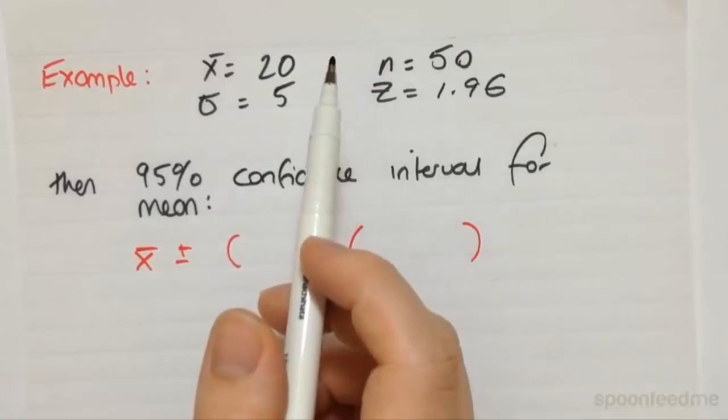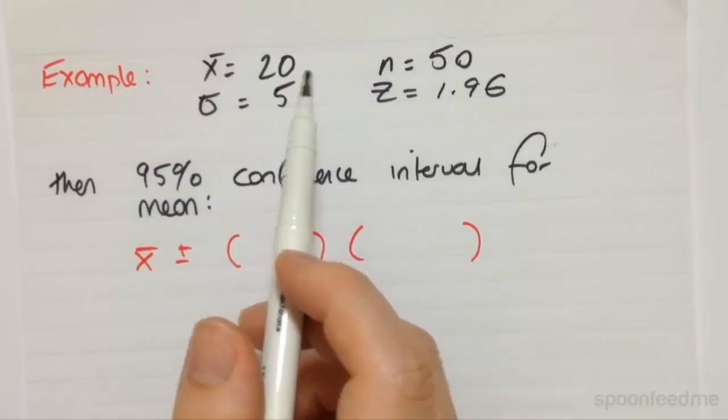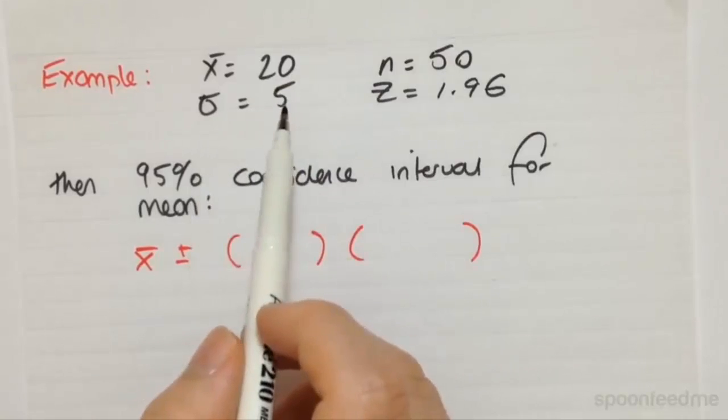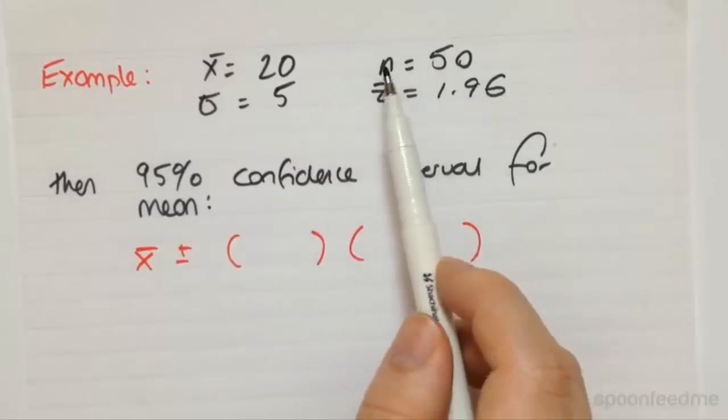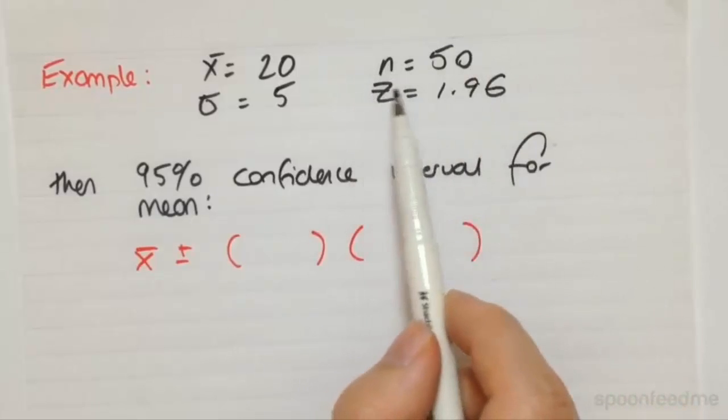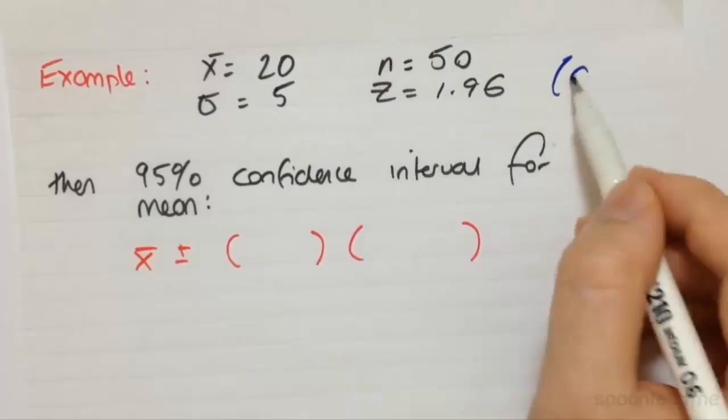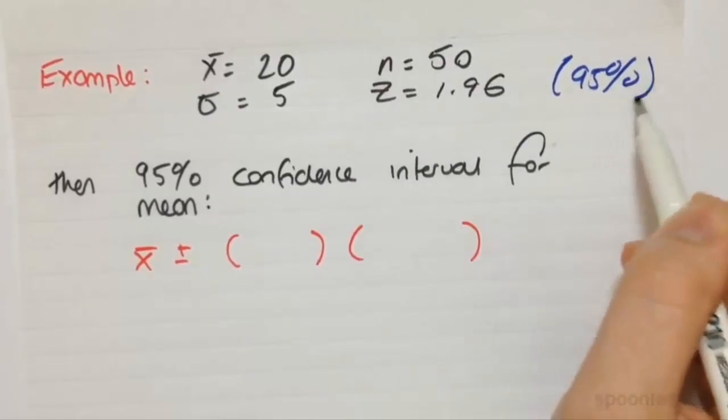So essentially, let's just say in our example here that we have our sample mean of 20, a standard deviation of the population of 5, a sample size of 50, and then a Z statistic, so that's the 95% confidence of 1.96.